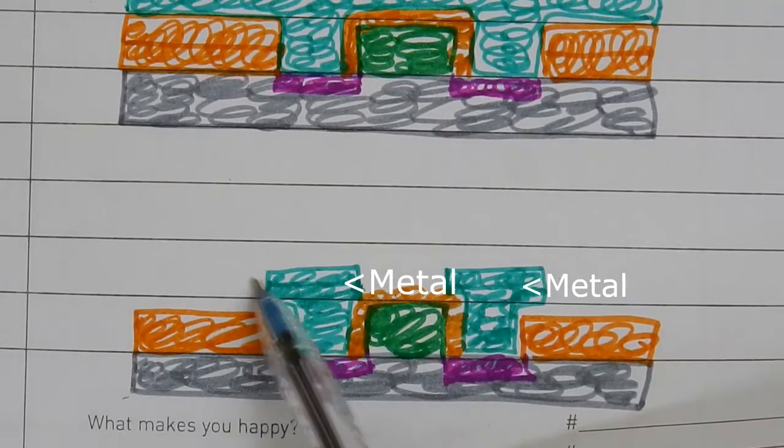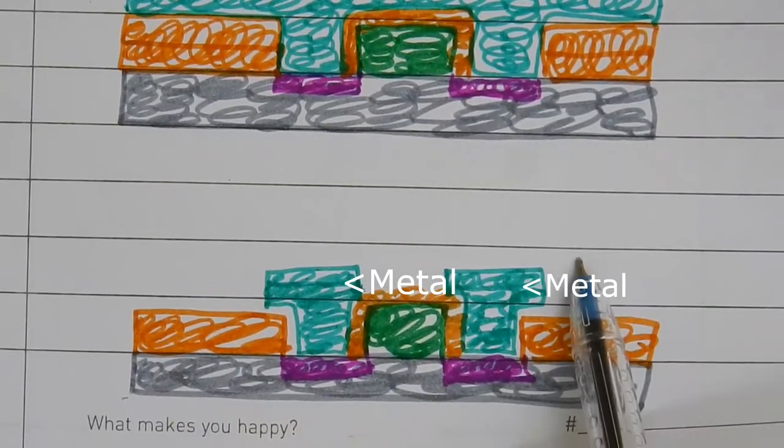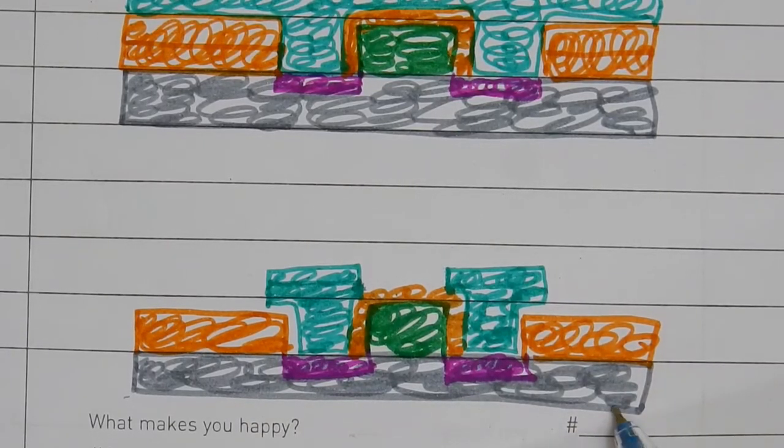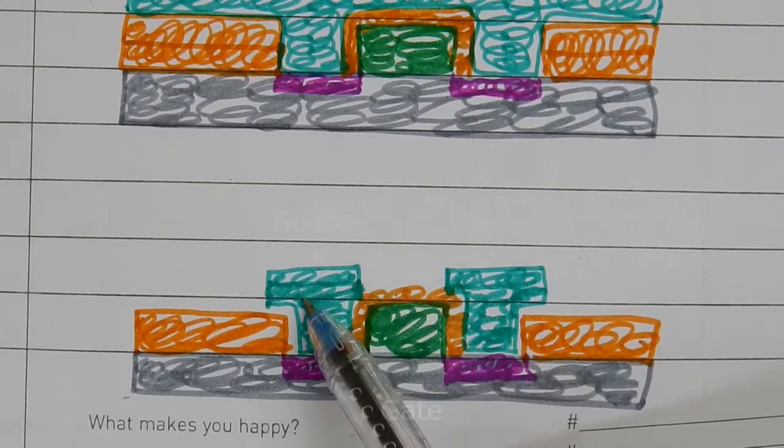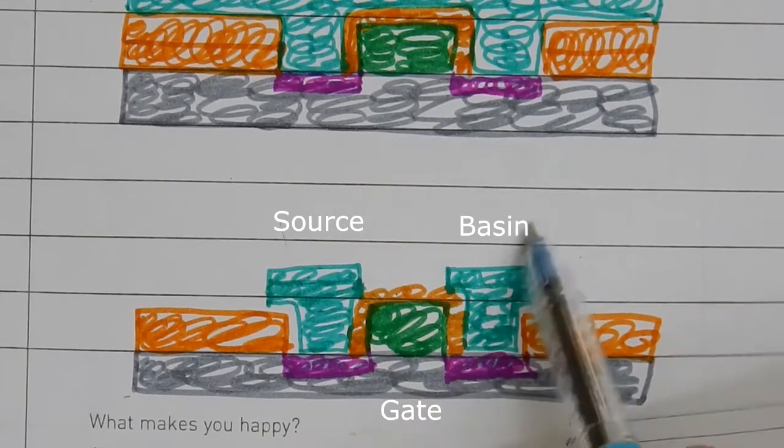We remove the extra metal. This is the final system. In this system, one part acts as the source, another as the drain, and another as the gate.